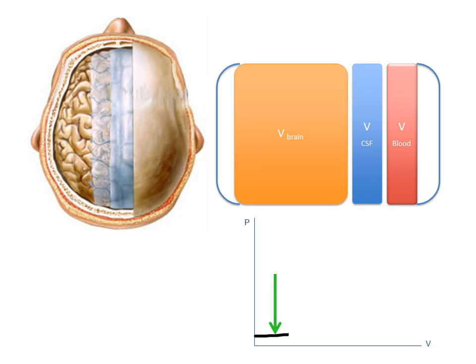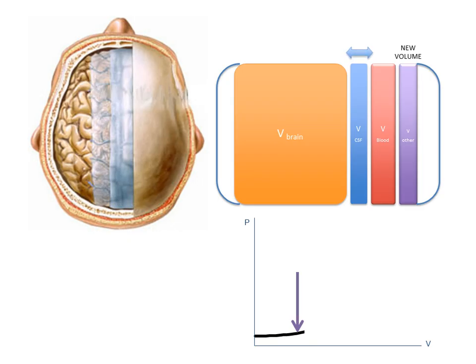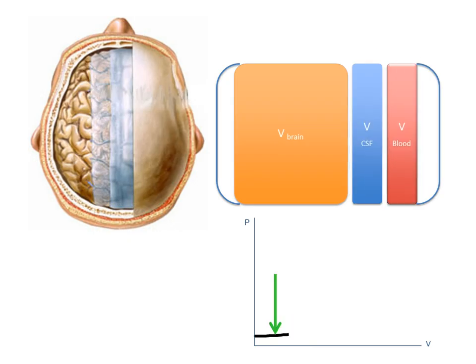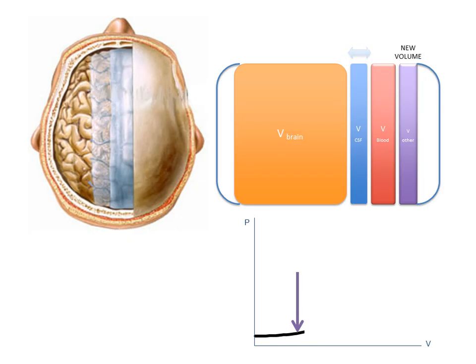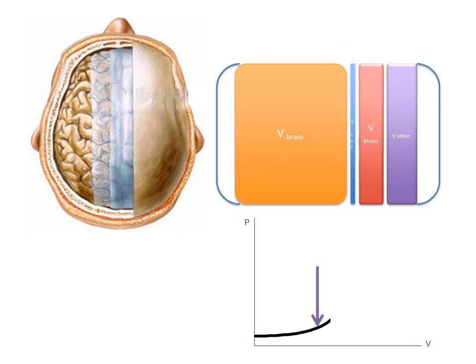Small changes in volume are compensated by changes in CSF — no change in pressure — even if you move, stand up, or lie down. But the problem comes when we have a new volume. New volume coming inside the system produces a compensatory change of CSF that goes down. Think about a hematoma — for example, an extradural hematoma, a contusion developing after a trauma — new volume coming inside the skull produces movement of CSF.